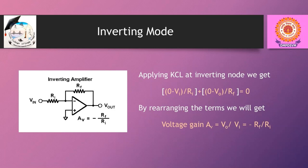The circuit diagram shows the operational amplifier connected in inverting mode. The inverting terminal is supplied with an input VIN through a resistance RI. A feedback resistance RF is connected between VOUT and RI. As the input impedance of the operational amplifier is very large, no current is supposed to enter into it. Therefore, whatever current enters through resistance RI will pass through RF and appear at the output.